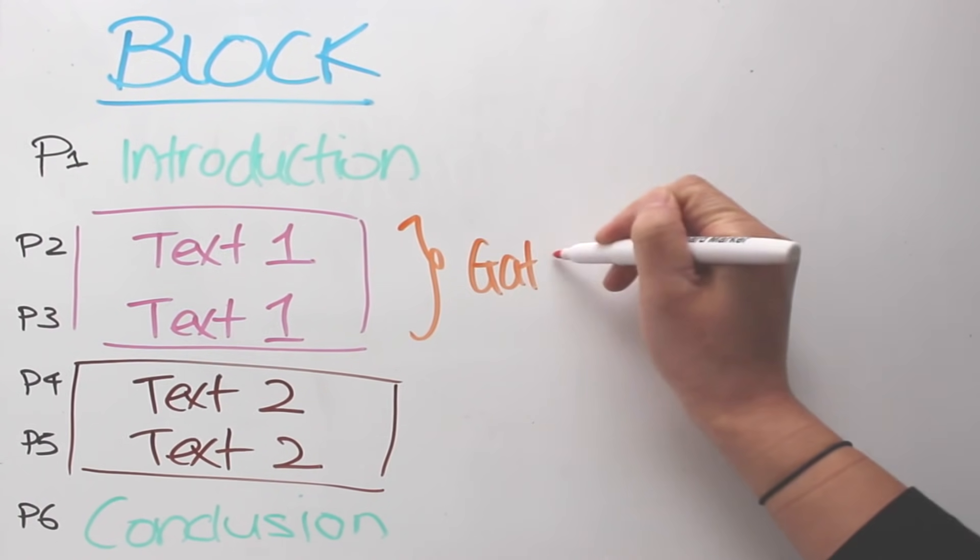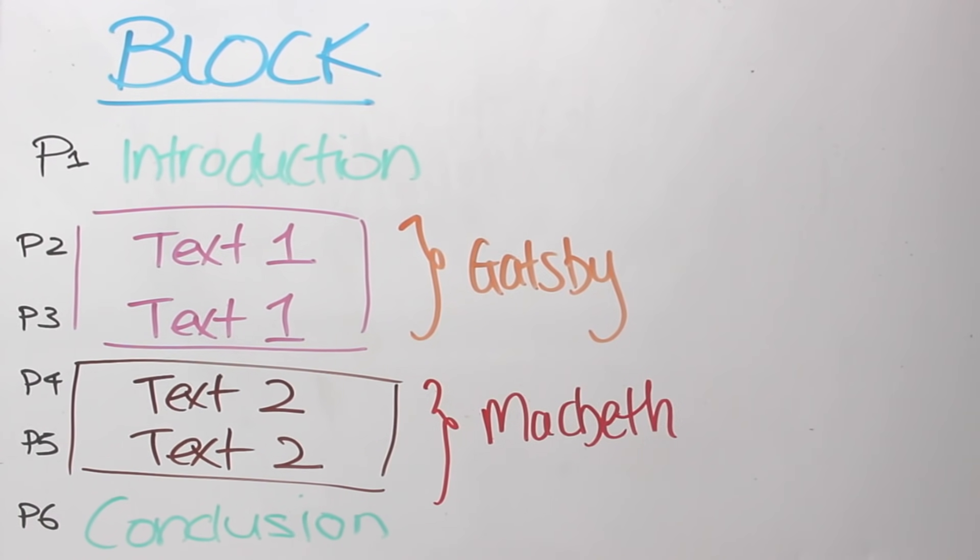So if our first text was to be on the Great Gatsby, then we'd spend majority of the first half speaking about Gatsby and the second half talking about Macbeth. Pretty straightforward, huh? What type of things would you talk about?